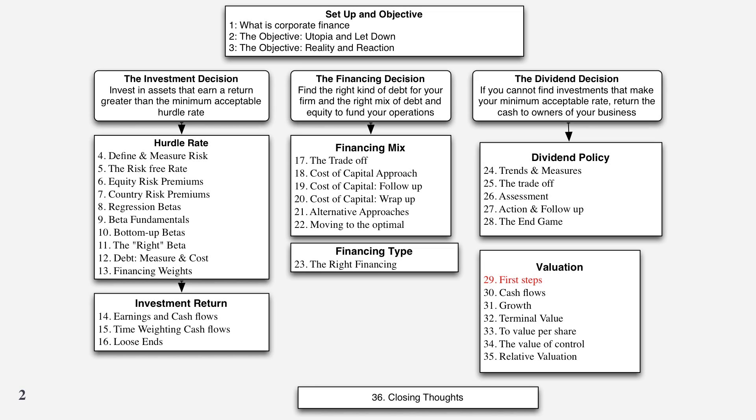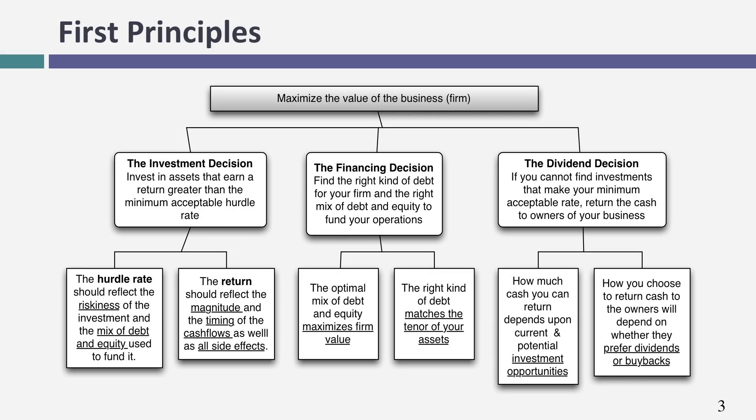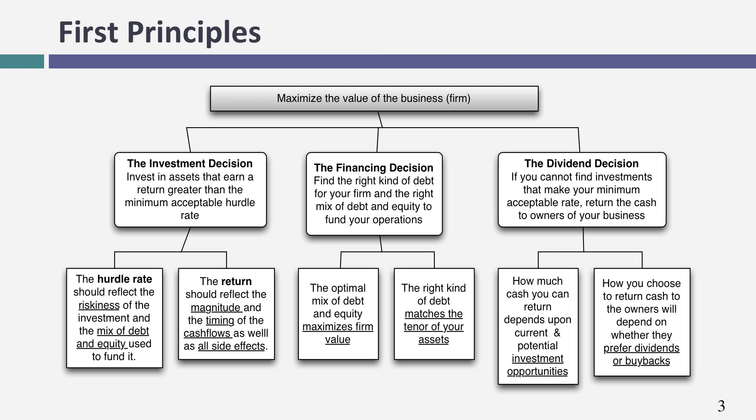The reason is very simple. The objective in corporate finance is to maximize the value of your business. So everything we've talked about — the investment decision, the financing decision, the dividend decision — has to show up somewhere in value. To set the table on valuation, let me first go back to the original big picture. Your objective is to maximize the value of the business. Everything feeds into that process.